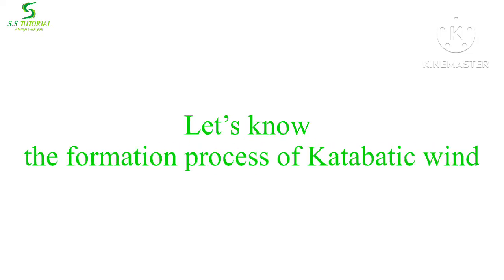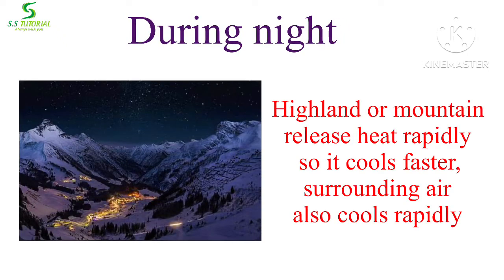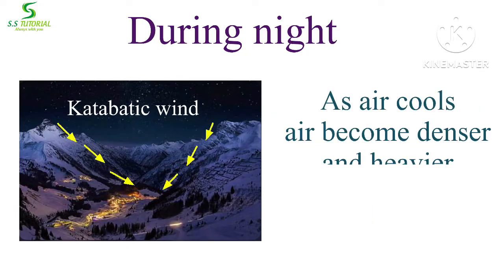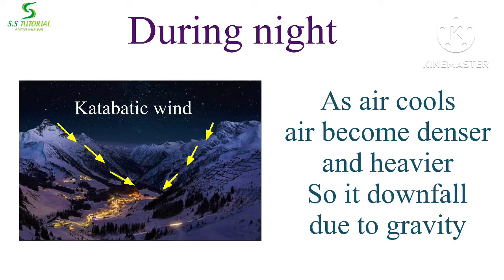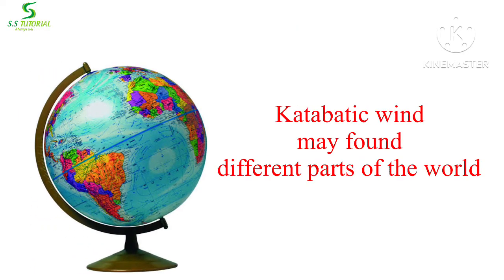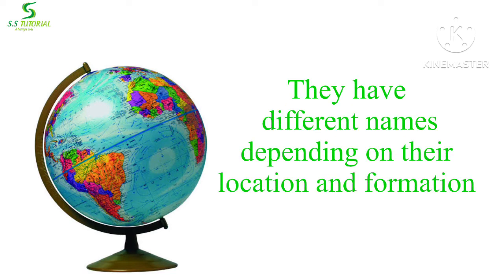Let's know the formation process of katabatic winds. During nighttime, in calm and clear weather, a highland or mountain — particularly a snow-covered surface — releases heat and cools relatively faster than air at lower altitudes. As air cools, it becomes denser and heavier. This dense cold air then blows downslope along the valley side due to gravitational force toward the valley. This wind is called katabatic wind or mountain breeze. Katabatic winds can be seen in many parts of the world and have many different names depending on their location and formation.